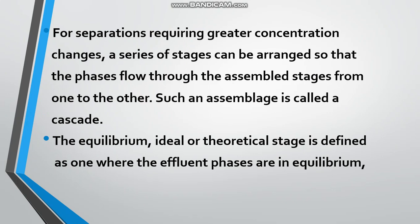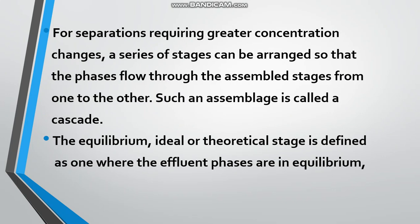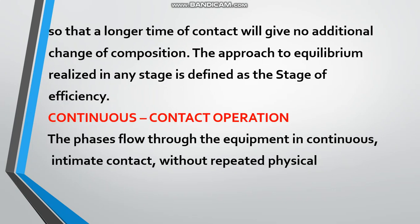For separations requiring greater concentration changes, we use a series of stages assembled together, and that assemblage is called a cascade. The equilibrium, ideal, or theoretical stage is defined as one where the effluent phases are in equilibrium so that a longer time of contact will give no additional change of composition. The approach to equilibrium realized in any stage is defined as the stage efficiency.